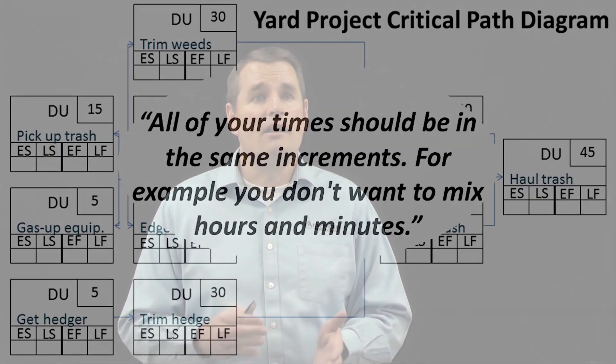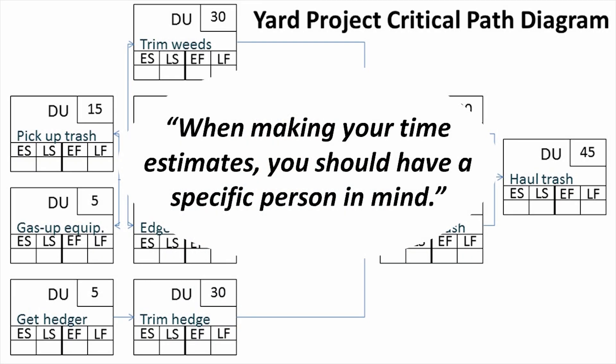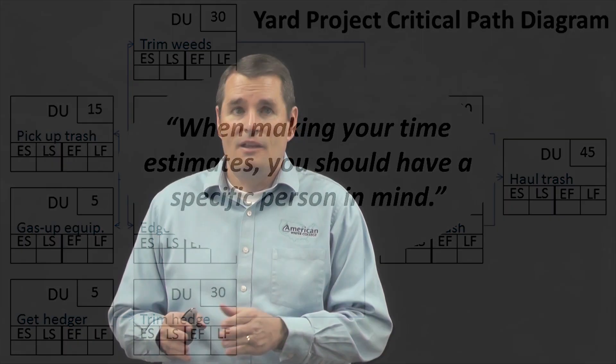Another rule to keep in mind is that all of your times should be in the same increments — for example, you don't want to mix hours and minutes. In our example, I've scheduled everything in minutes, just to prevent confusion. Once it's all diagrammed out, I can add up all of the minutes and then convert to hours to get a total time for this project. You should also keep in mind that when making your time estimates, you should have a specific person in mind. If my teenage son is working with me, he might not work as fast as I do, or he may work faster — your estimates will be more accurate if you know who will be doing the job when you do your estimate.